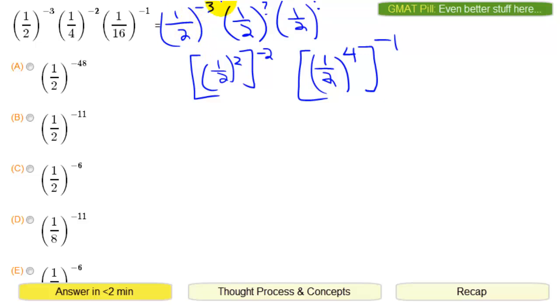So if we combine this first term, this second term, and this third term, we basically have one-half to the minus three. Remember, we keep the base and add the exponents. So minus three, and then two times minus two is minus four. Four times minus one is minus four. So that's basically one-half to the minus eleventh power.